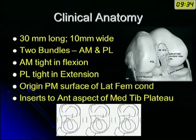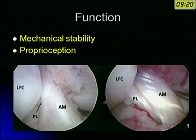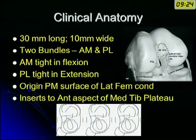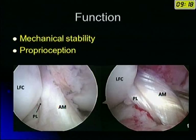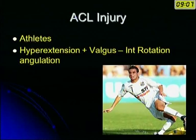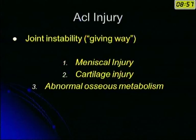The origin is from the posterior medial surface of the lateral femoral condyle and inserts into the anterior aspect of the tibial plateau. The function of the anterior cruciate ligament is mechanical stability and proprioception. The injury is usually common in athletes, but in our country a lot of patients come following two-wheel accidents. It's usually hyperextension with valgus internal rotation that gives rise to this injury. The patient comes with a classical history of the knee giving way or joint instability on examination, and later may have pain due to associated meniscal or cartilage injury. ACL injury can also lead to abnormal osseous metabolism inside the knee.